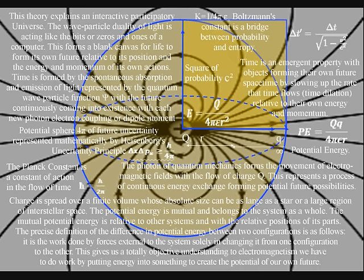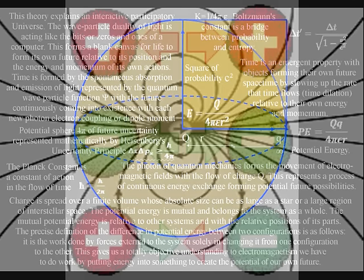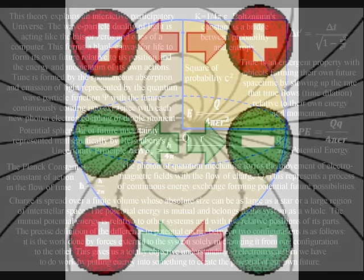We see like charge repel, representing the expansion of space that can be measured as a period of time. Unlike charge attracts, representing the demise of space and time as an object or process becomes part of the past and ceases to exist.